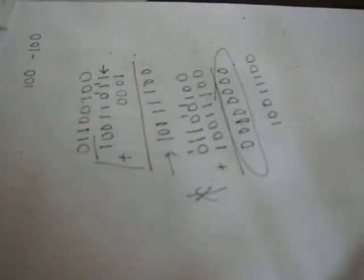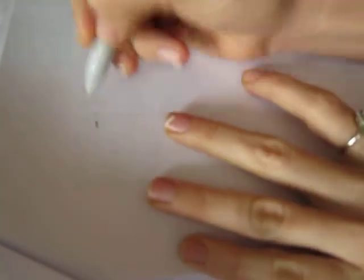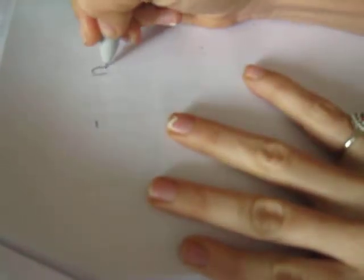Let's try one more example. Let's try negative 128 — or rather, let's find the two's complement of 128.